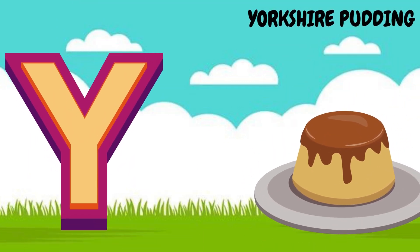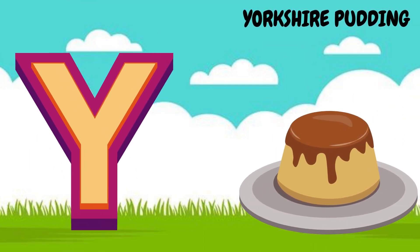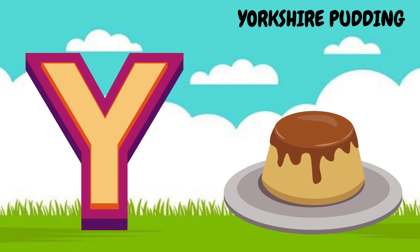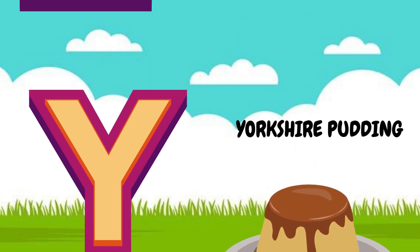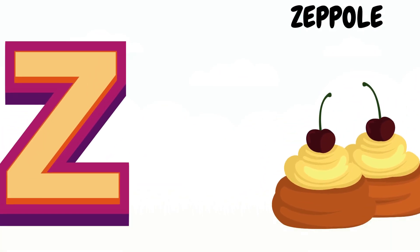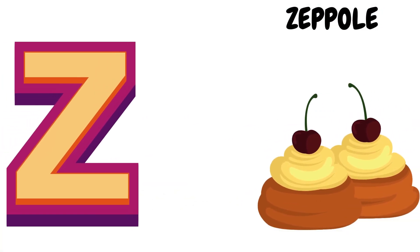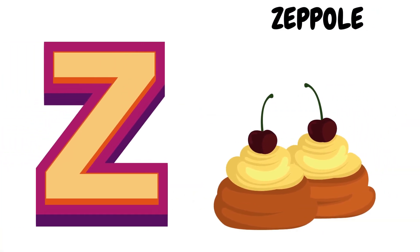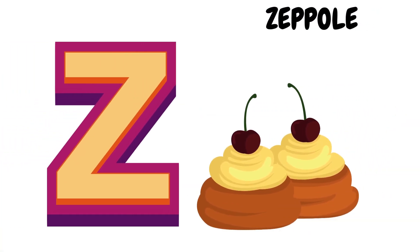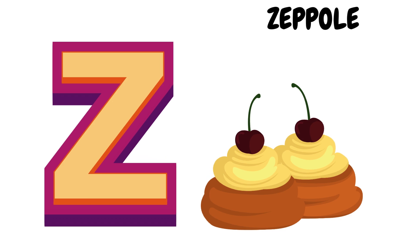Y is for Yorkshire Pudding. Yuh, yuh, Yorkshire Pudding. Z is for Zeppel. Zuh, zuh, Zeppel.